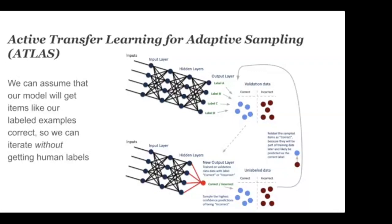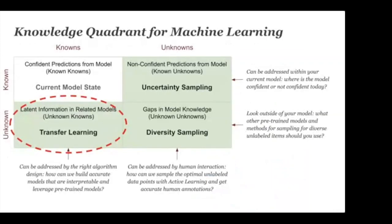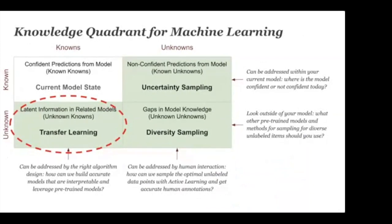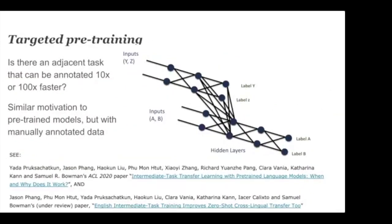With a few minutes remaining, I want to share some other developments in active learning covered in more detail in my book. In transfer learning, there's interesting recent work in intermediate training. You're likely familiar with taking large pre-trained models like BERT, ELMo, RoBERTa, or XLMR and using them as embeddings or for fine-tuning. But there's also interesting recent work showing that adjacent models can be useful as representations.